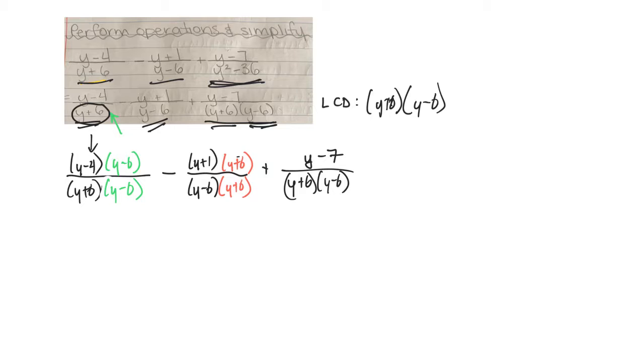Okay, so now I can put them all under one denominator. Let's do that. So I just have a y plus 6, y minus 6. But then on the top I'm going to have to FOIL all of this stuff. FOIL all this stuff. And this one I don't have to FOIL, but I'll have to include it. So let's do the first one. The y squared minus 6y minus 4y plus 24.